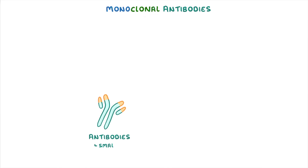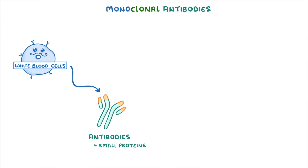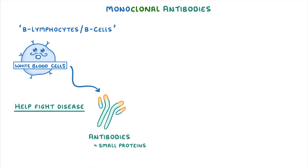If you remember from the immune system topic, antibodies are small proteins produced by our white blood cells, specifically B lymphocytes, or B cells, and their job is to help us fight disease, which they can do by binding onto foreign material called antigens.